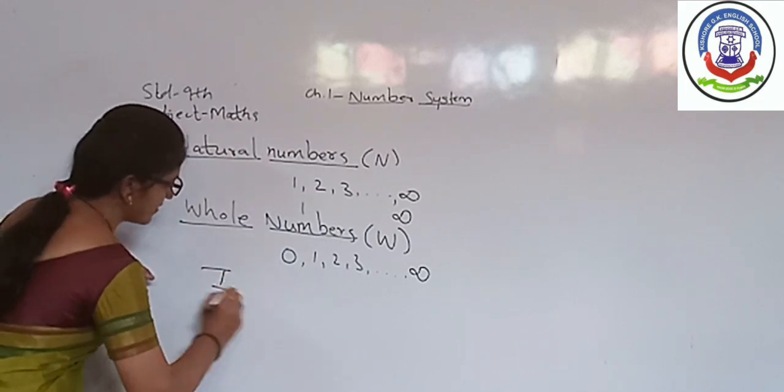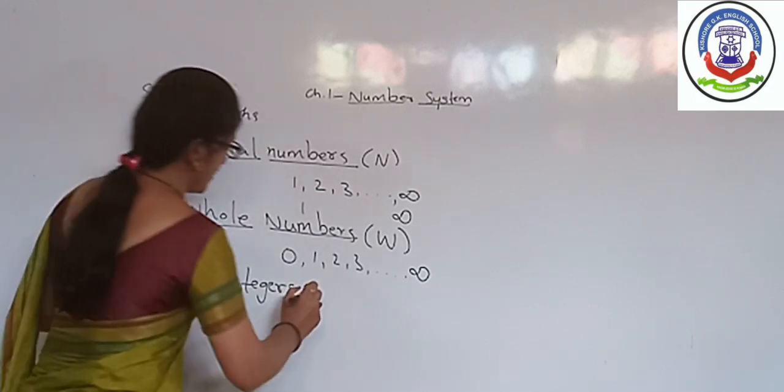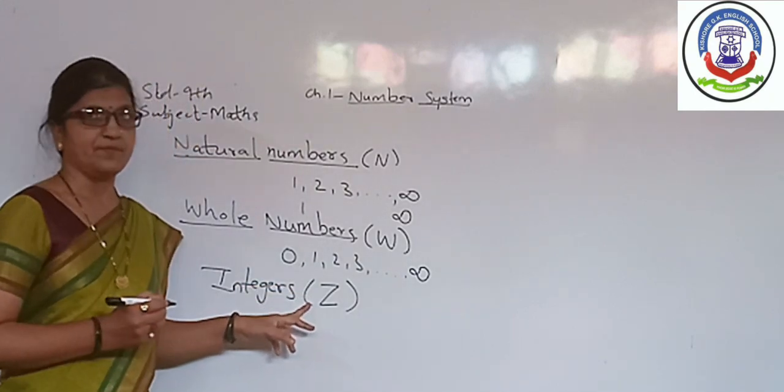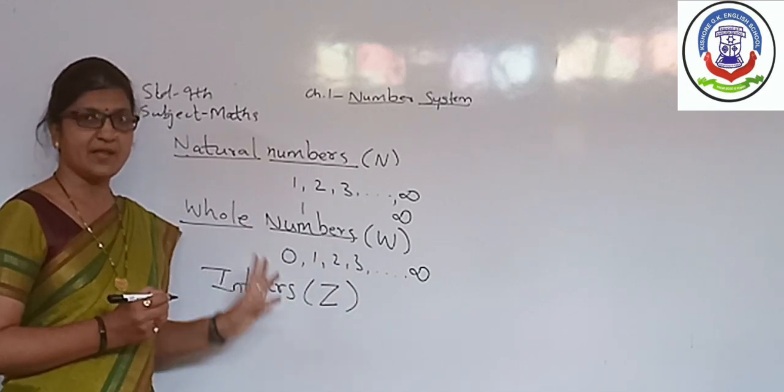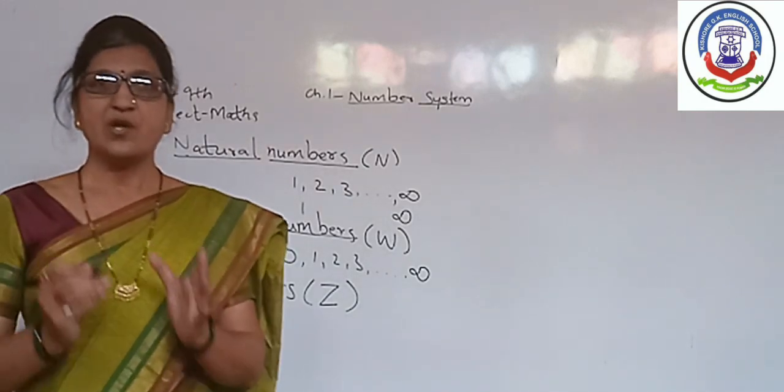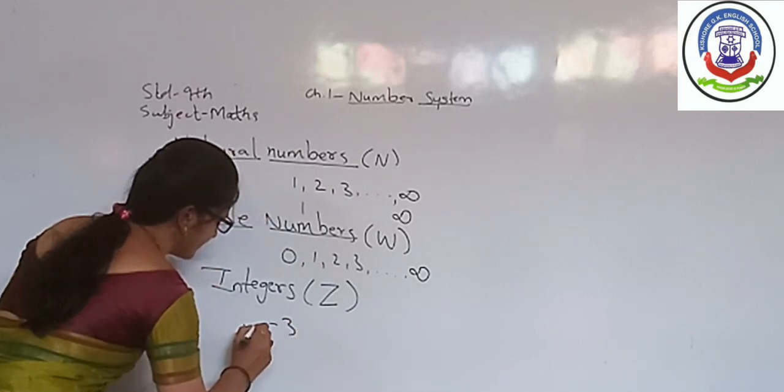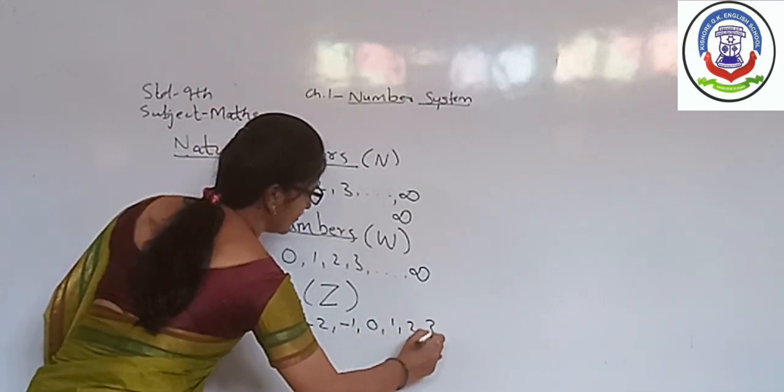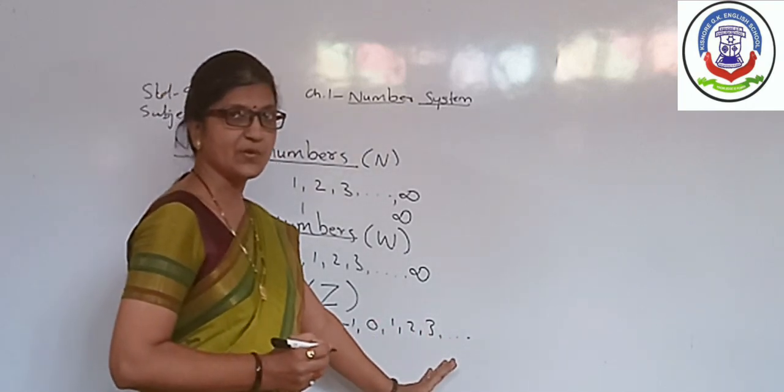Next set is Integer. Symbol which is used to represent integer is Z. This set includes natural numbers, whole numbers, as well as zero. Z stands for Zahlen. That means Z means to count. These numbers include negative numbers: minus 2, minus 3, minus 1, 0, 1, 2, 3. First member is also infinity, last member is also infinity.